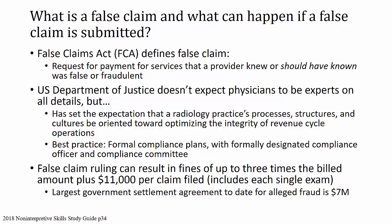A false claim ruling can result in fines of up to three times the billed amount plus $11,000 per claim filed, which includes each single exam — that can add up very quickly. Often it ends up with a settlement; the largest government settlement for alleged fraud is $7 million. You need to bill for what you actually do, and if you bill for more than what you actually did, even if you didn't realize it, that constitutes fraud and you can get in big trouble.